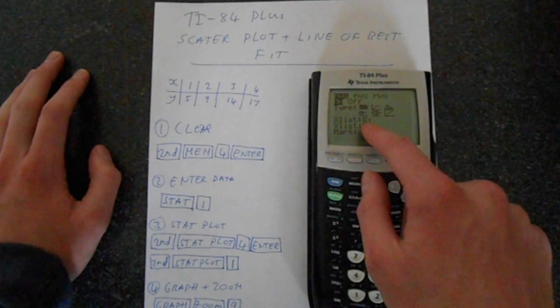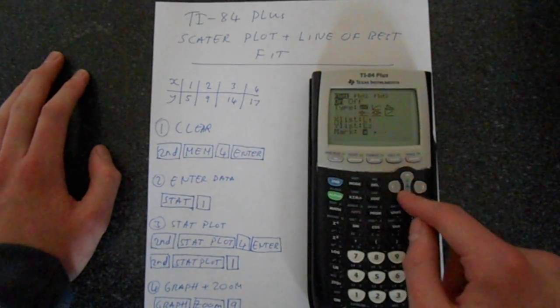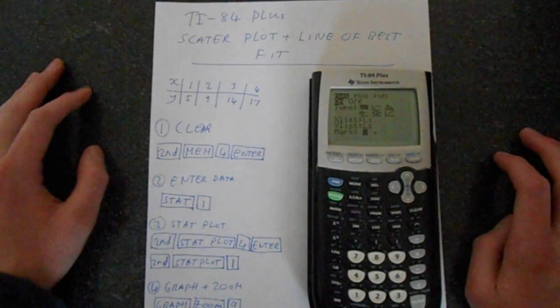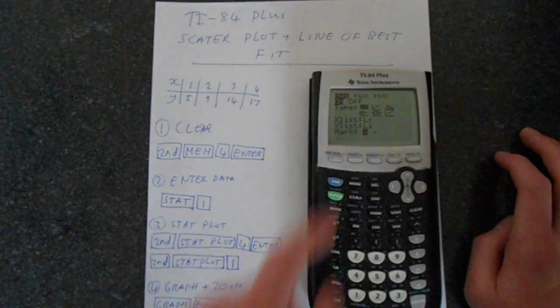So on x we've got list 1, y is list 2, and then what plotting mark you want. You can select these. We'll just leave these as default, make sure that this is on, otherwise it's not going to plot.